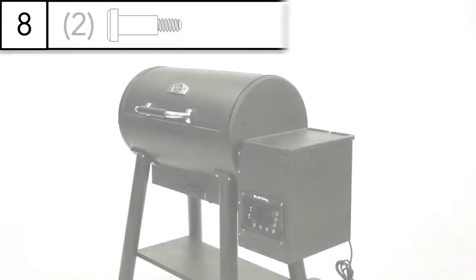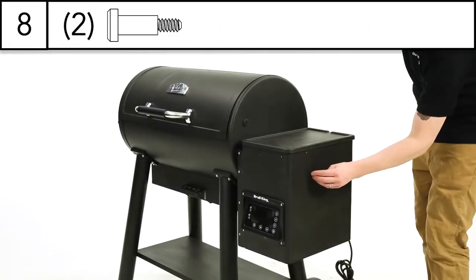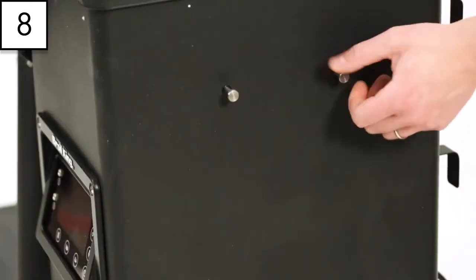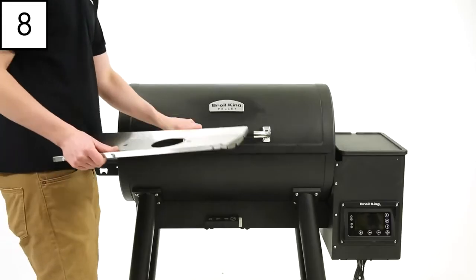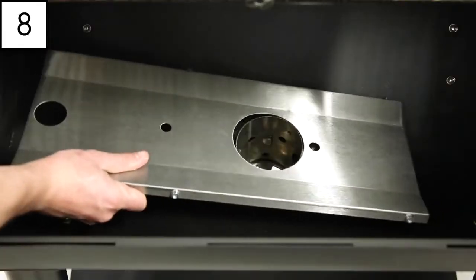Step 8. Install the two accessory hooks onto the side of the pellet hopper. Insert the heat shield inside the bottom of the cook box.